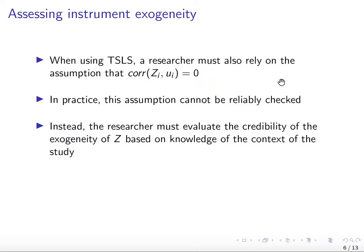Instead, what you're going to use is you're going to defend the credibility of the exogeneity of your instrument based on the knowledge of the context of the study. As a researcher, if you find an instrument and it passes the first test — the relevance — and people believe your instrument is strongly correlated with your endogenous variable x, then you would have to defend that your instrument is plausibly exogenous to the variations in y, meaning z only has an impact on y through x.